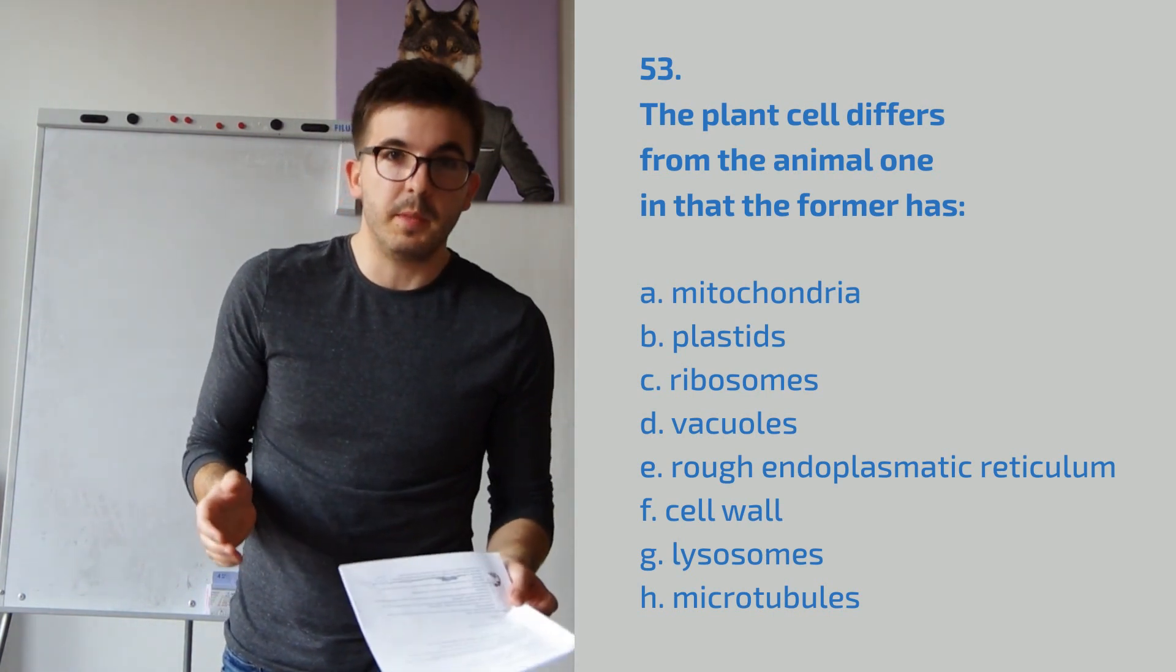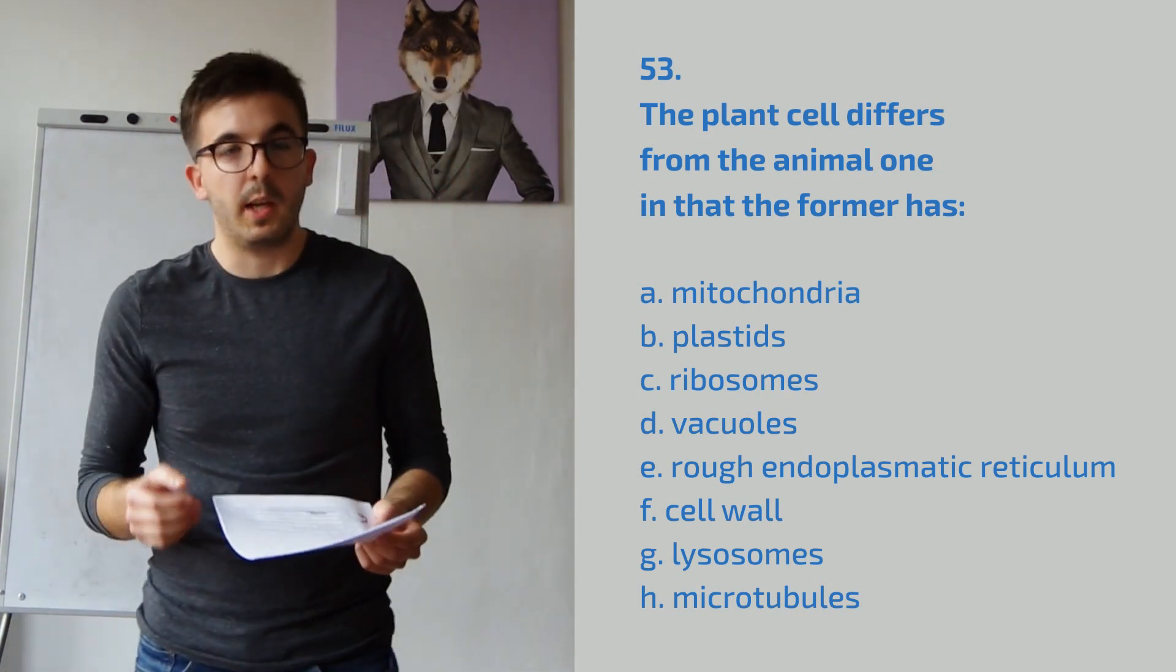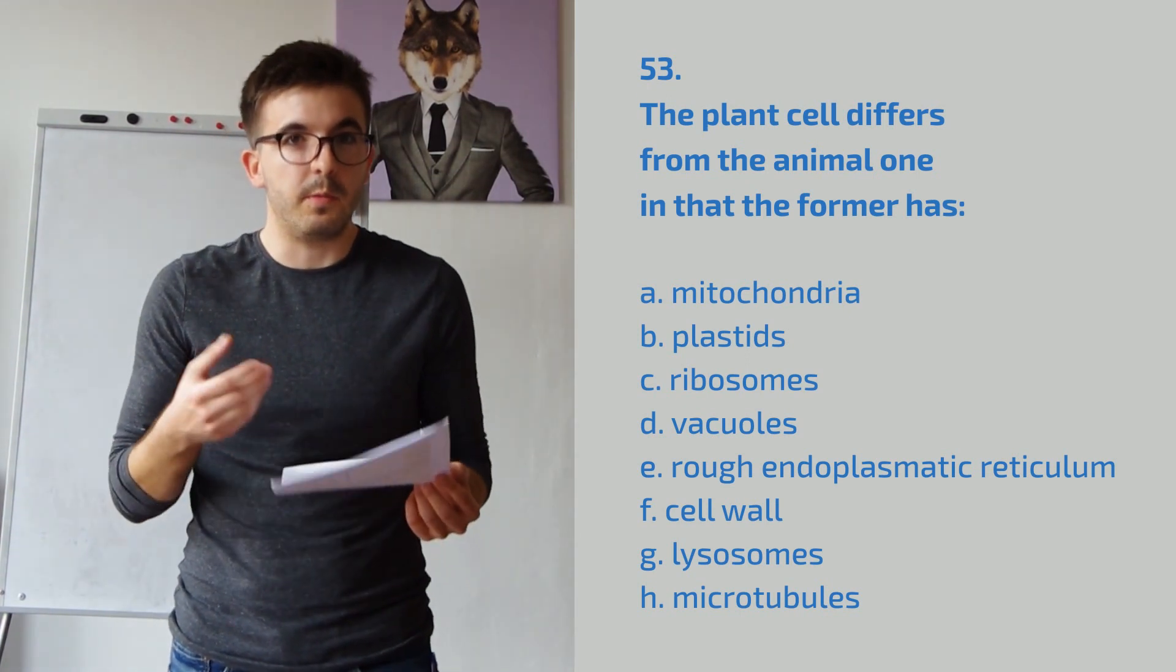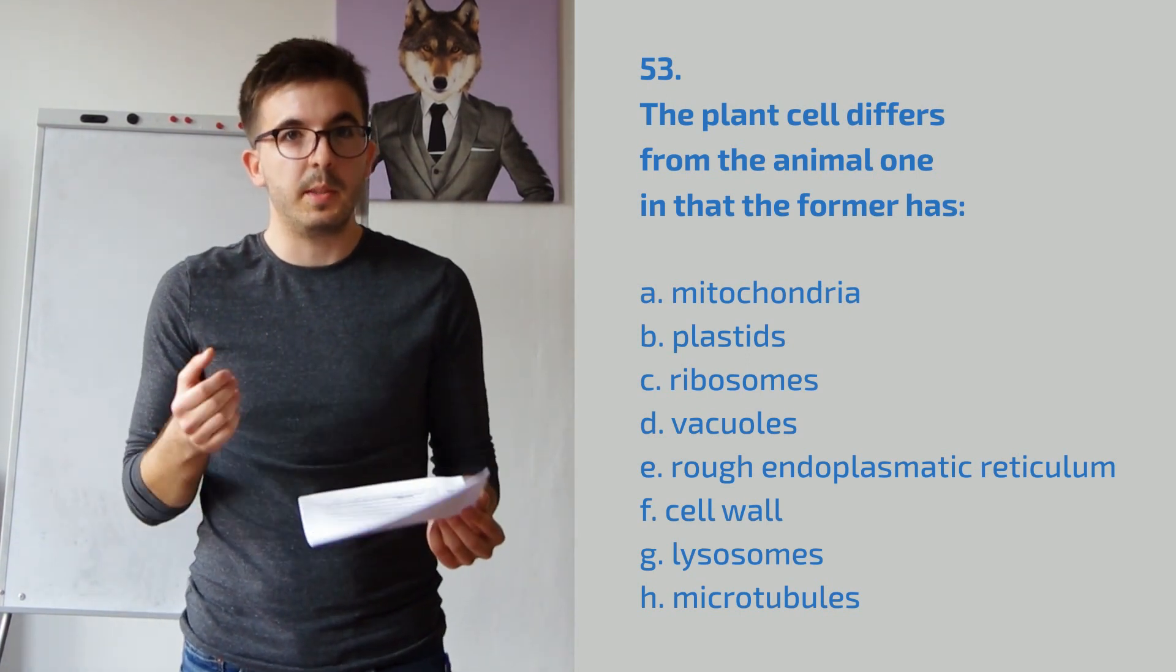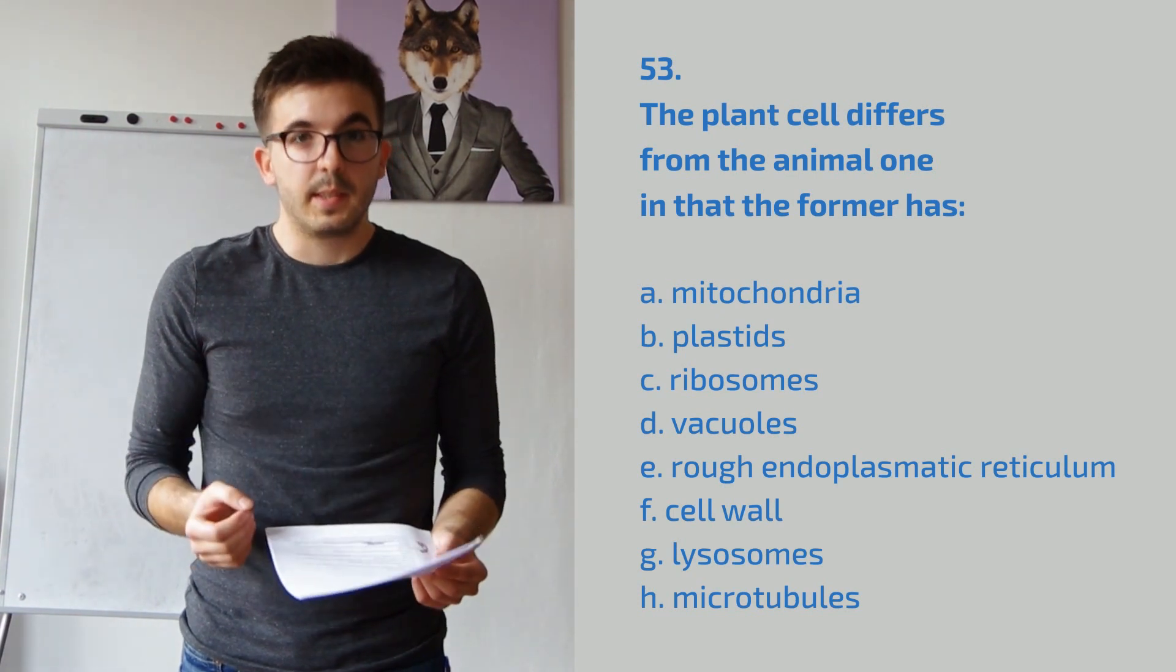They need pigments for photosynthesis, because this is how plant cells get their food. And they need somewhere to store these pigments, and these are called plastids.